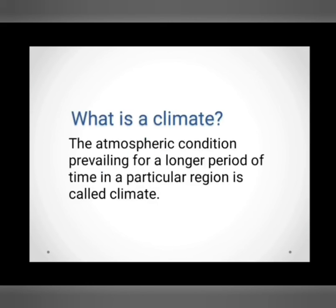What is the climate? The atmospheric condition prevailing for a longer period of time in a particular region is called climate. To understand this definition, let's take an example about the three seasons of the year.